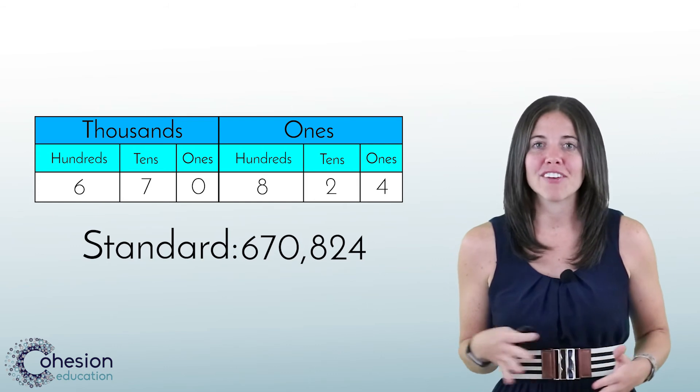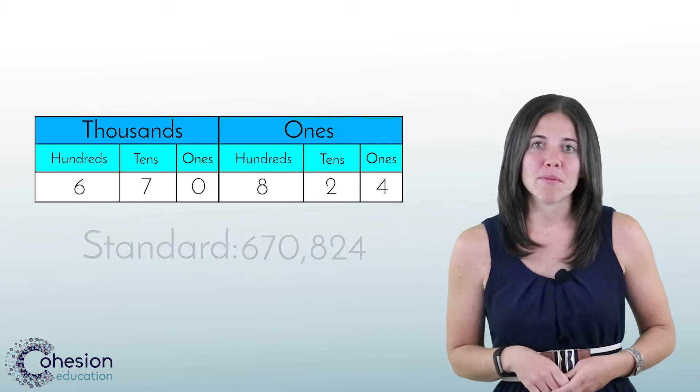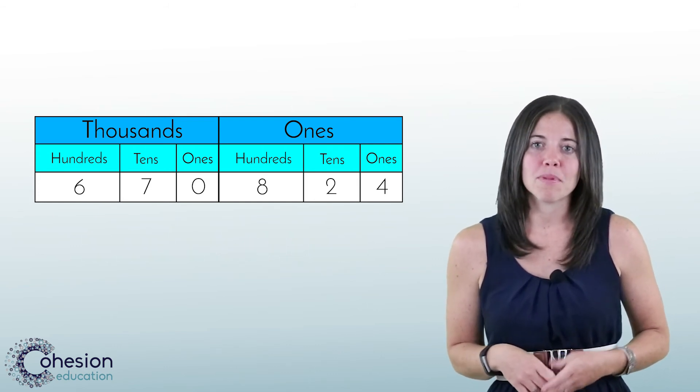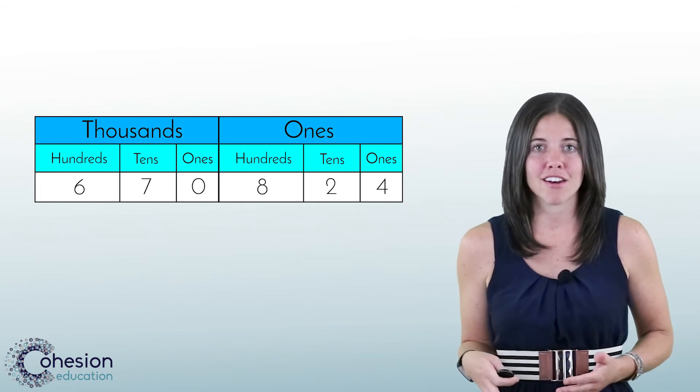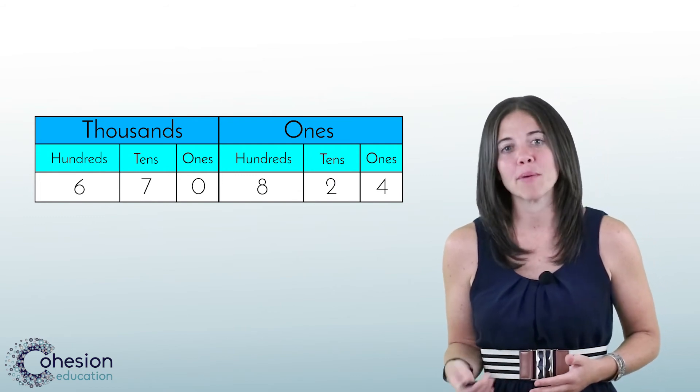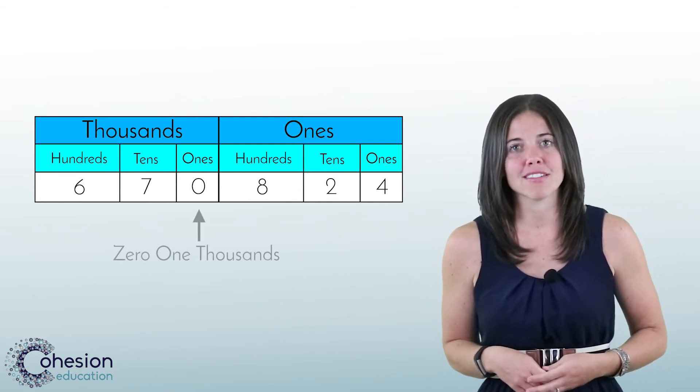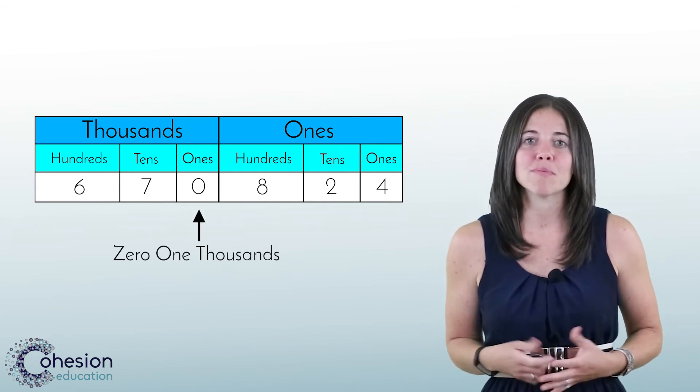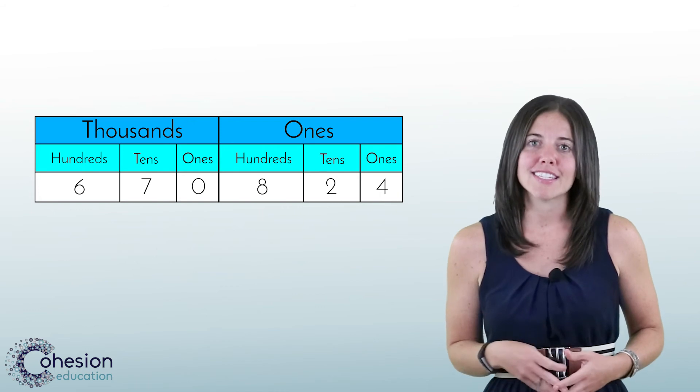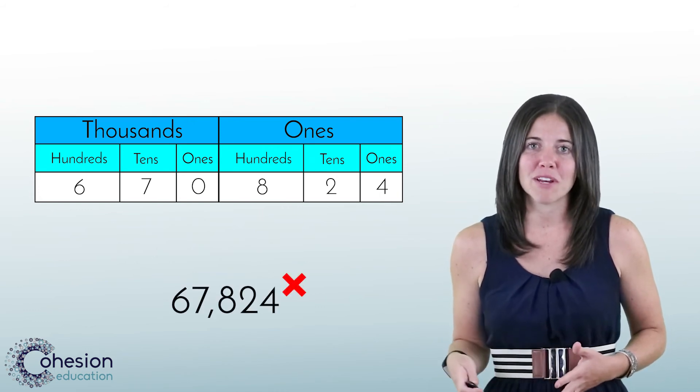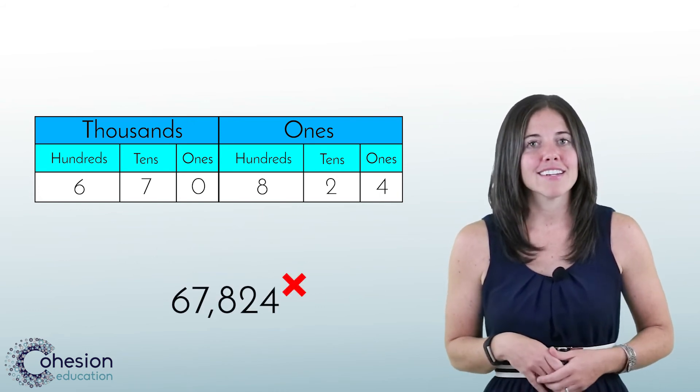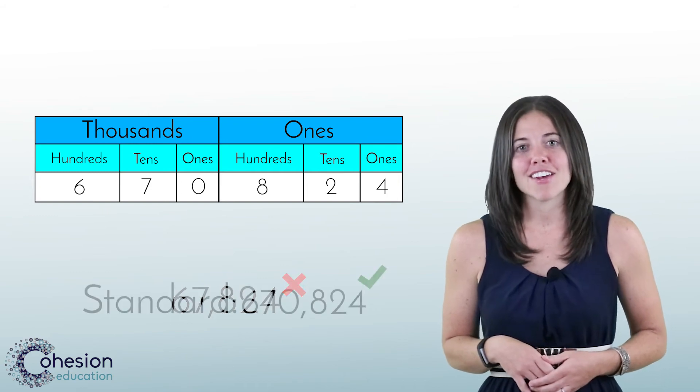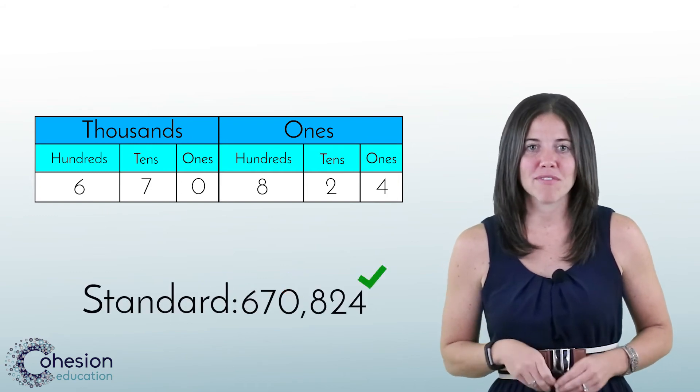Zeroes tend to mislead students when reading and writing numbers. For example, 600,000 plus 70,000 plus 800 plus 20 plus 4. Notice there are zero thousands. Without a solid understanding of place value, students might incorrectly convert this to 67,824, instead of correctly to 670,824.